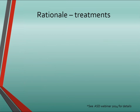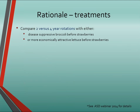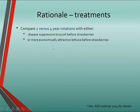As a group we decided on the following treatments. We wanted to compare two-year versus four-year rotations — some growers would like a two-year rotation but we're very concerned about disease management. We're comparing two different two-year rotations and two four-year rotations: either one that suppresses disease by planting broccoli between strawberry crops, or a potentially more economically attractive option of growing lettuce before strawberries.